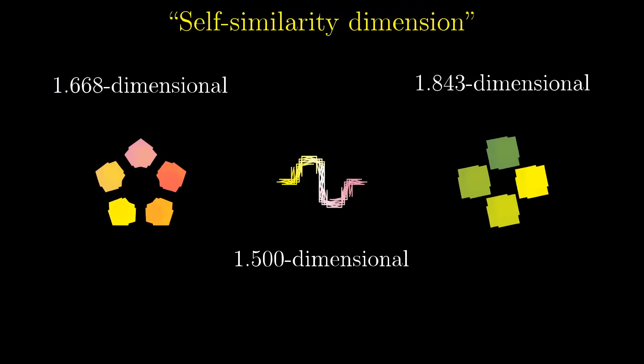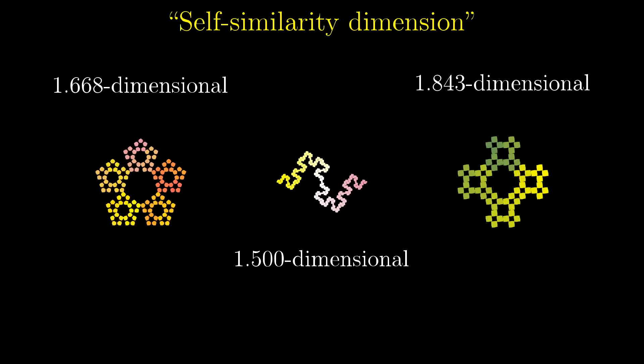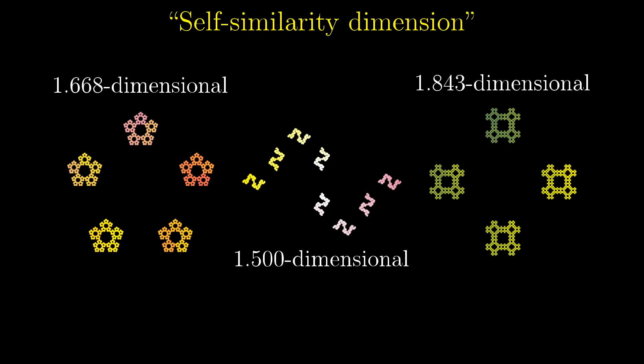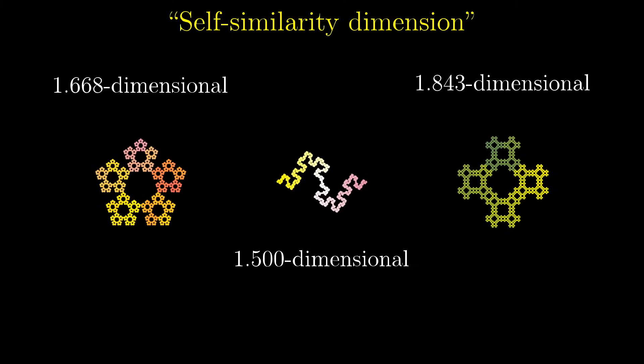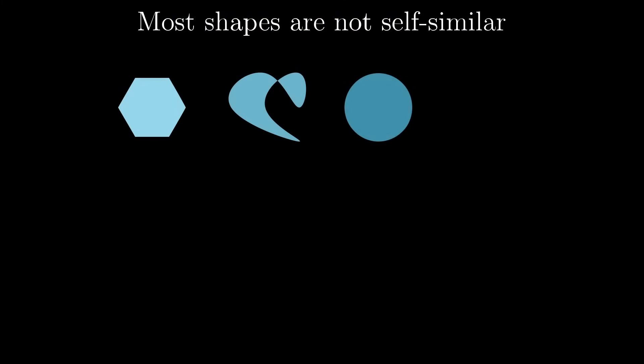And what I've described so far, everything up to this point, is what you might call self-similarity dimension. It does a good job making the idea of fractional dimensions seem at least somewhat reasonable. But there's a problem. It's not really a general notion. I mean, when we were reasoning about how a shape's mass should change, it relied on the self-similarity of the shapes, that you could build them up from smaller copies of themselves. But that seems unnecessarily restrictive. After all, most two-dimensional shapes are not at all self-similar.